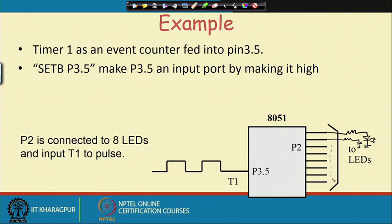Since we cannot display a number more than 8 bits wide, and port P2 has only 8 lines, we have 8 LEDs — that is fine. We can just reload this counter with 0 after there is an overflow to FF.